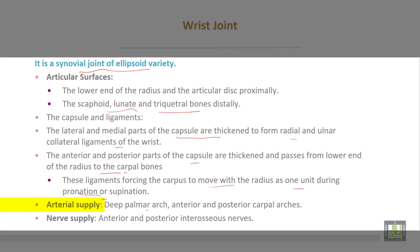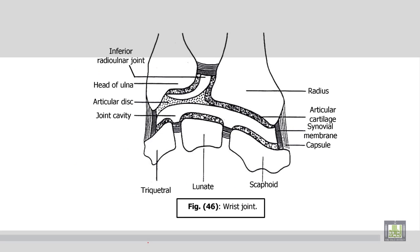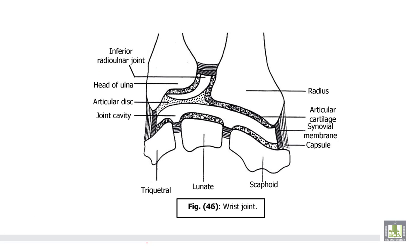Arterial supply: deep palmar arch, anterior and posterior carpal arches. Nerve supply from anterior and posterior interosseous nerves. This is the wrist joint. This shows the collateral ligaments and the inferior radio-ulnar joint separated by the articular disc.